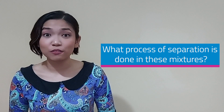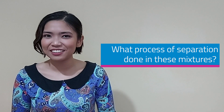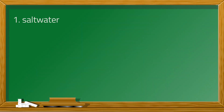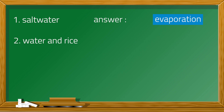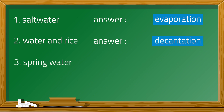So there you go! Now, can you tell what process of separation is done in these mixtures? First, salt water. Second, water and rice. Third, spring water. Fourth, flour.